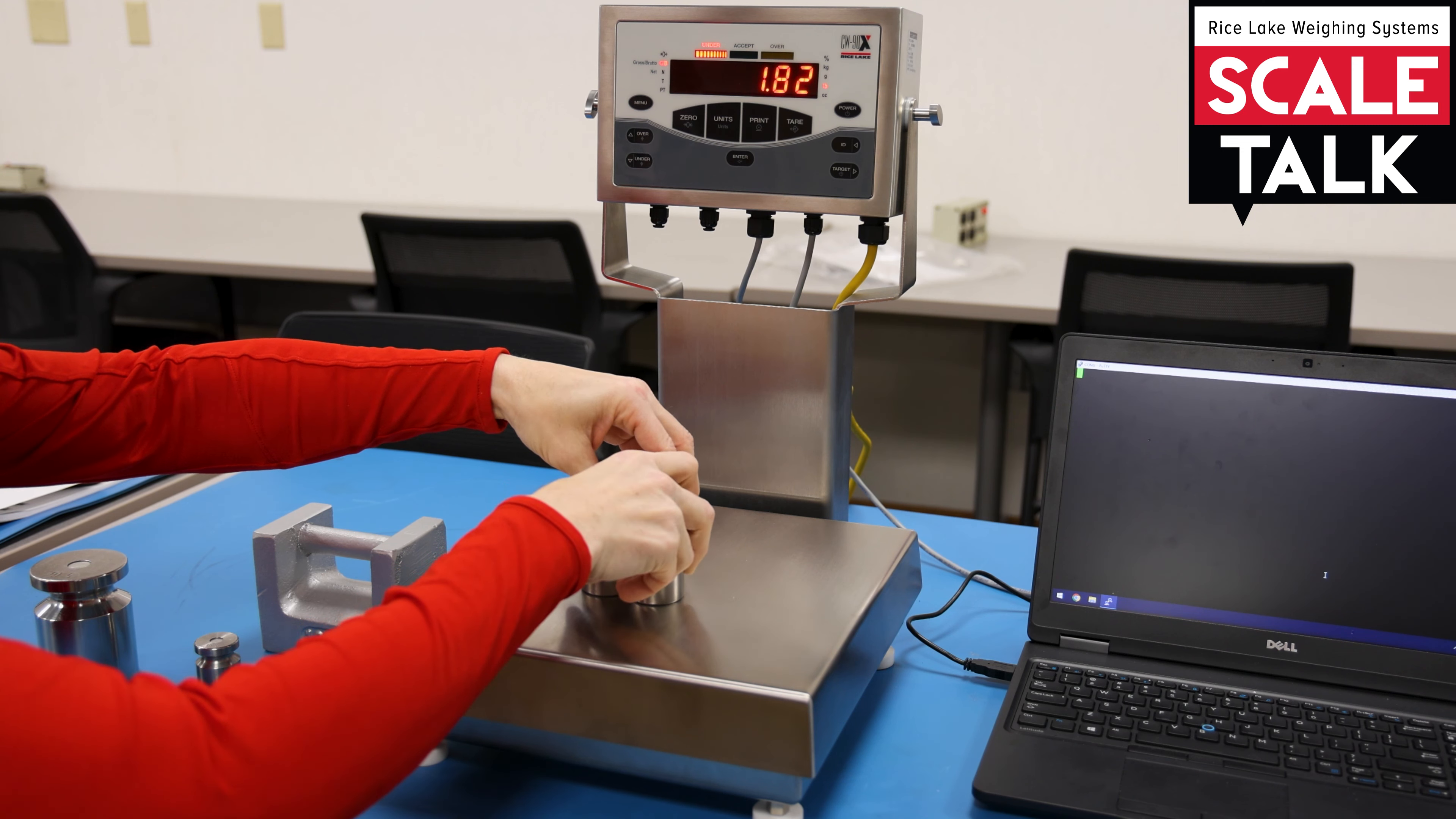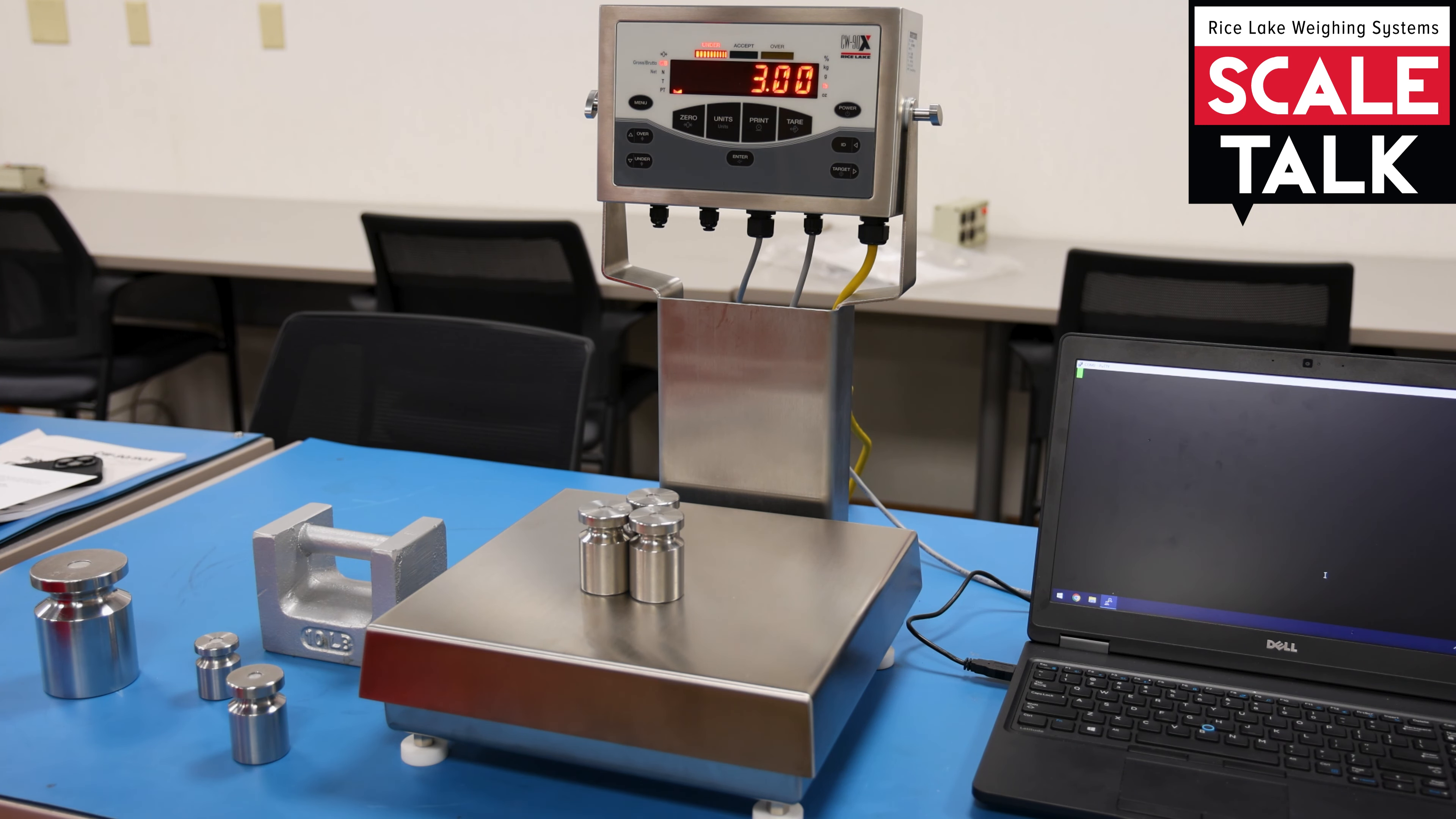So if I put three pounds on the scale, it's going to show under. So if I want three pounds to be included in my range, I would have to drop that under value to something a little less than three.